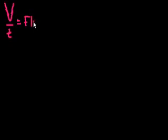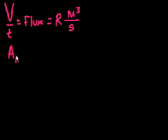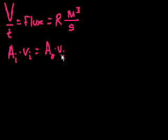The volume per time equals flux, and the variable generally used for flux is r, with units of meters cubed per second. We also know that A_in × v_in = A_out × v_out — this is the equation of continuity, and it holds true whenever we have laminar flow. In the next video, I'm going to use some of this information to figure out how much power there is in a system where we have fluid going through a pipe.